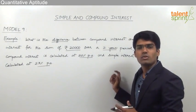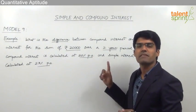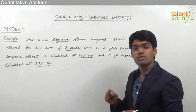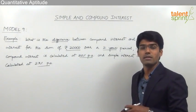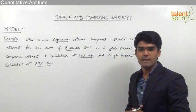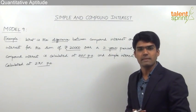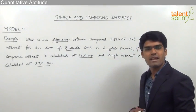Now to solve this question, we cannot use the formulae that we have discussed for difference between SI and CI. Why? Because those formulae that we have discussed in one of the earlier models are applicable only when the rate of interest is same for both CI as well as SI.